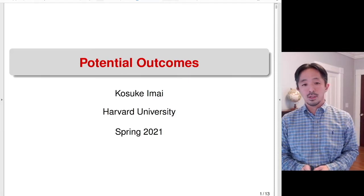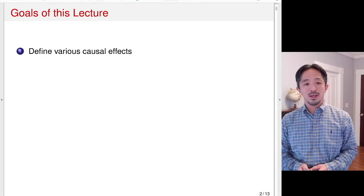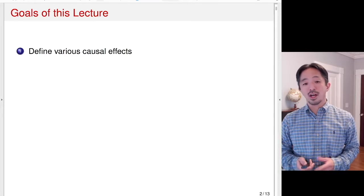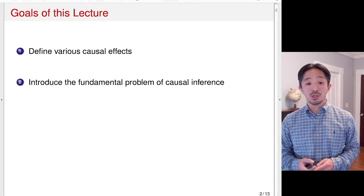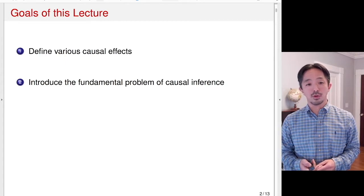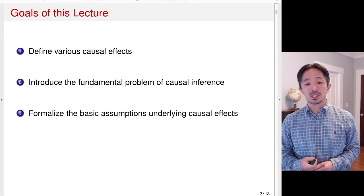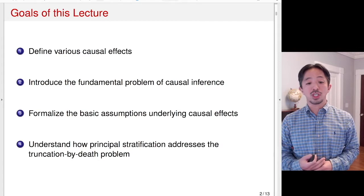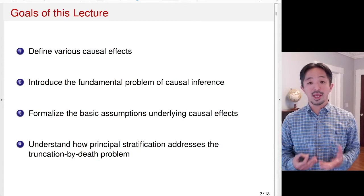This lecture discusses potential outcomes and has four goals. First, we'll define various causal effects. Second, we'll introduce the fundamental problem of causal inference. Third, we'll formalize the basic assumptions underlying causal effects. And lastly, we'll try to understand how principal stratification addresses the truncation by the death problem.